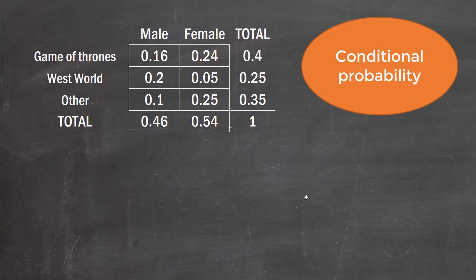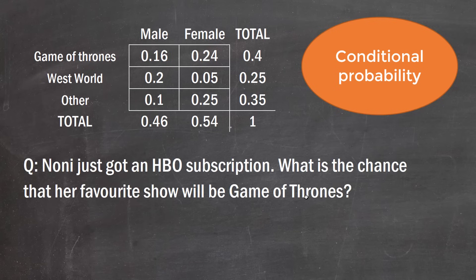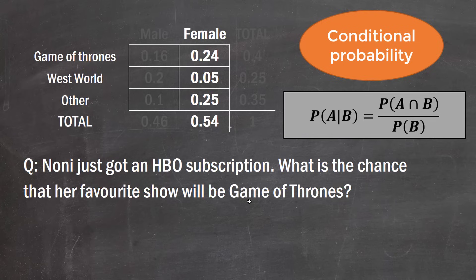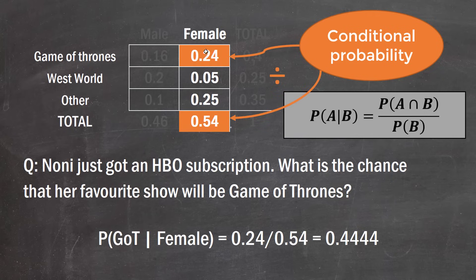This brings us to conditional probability, which is slightly more tricky. For example: Noni just got an HBO subscription — what's the chance her favorite show is Game of Thrones? The formula is P(A|B) = P(A ∩ B) / P(B). Because Noni is female, we focus only on the female column, ignoring the rest of the table. We take the joint probability 0.24 and divide by the probability of the condition 0.54 (female), giving approximately 0.4444.